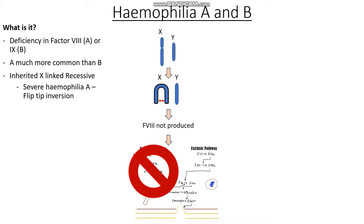Which groups of people do we tend to see haemophilia A and B in? We often tend to see this in males, as they are X-linked recessive conditions. However, there may be exceptions — we may see haemophilia in females, and a condition like Turner's syndrome is an example. It's good to know about this alteration to the rule.